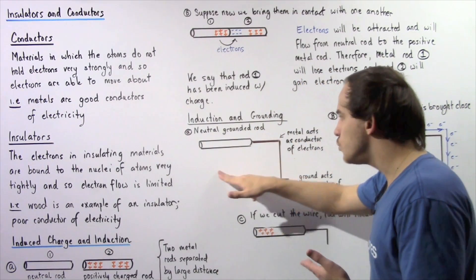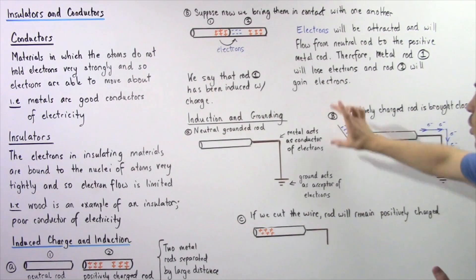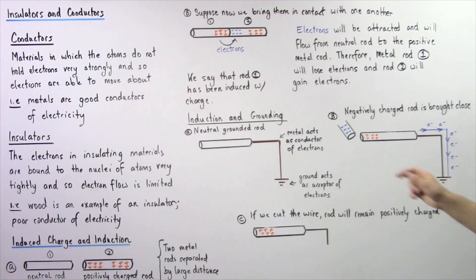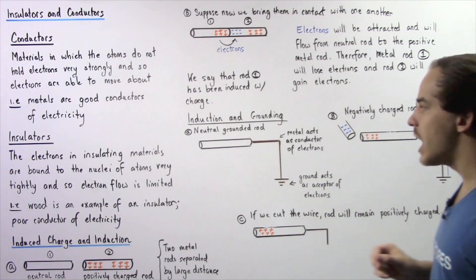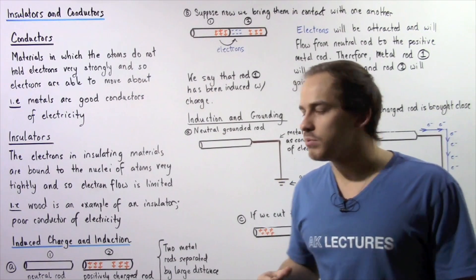So once again, we have a neutral charge. Let's suppose we move on to part B. In part B, we bring a negatively charged rod very close to this rod. What will begin to take place?